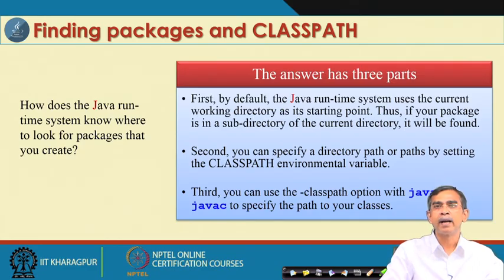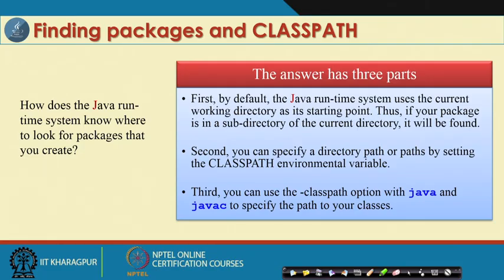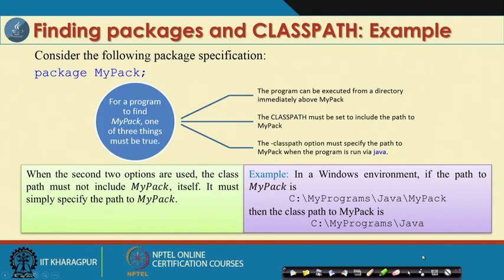If you explicitly mention the class path, you can access a package from anywhere — it is not necessary that all packages be under your working directory. The third method is to explicitly invoke a particular package using the java command. For example, if you want to run a program in package xyz under directory abc, you write: java abc.xyz.ClassName. These are the three ways to specify package location, and you can use them as needed.